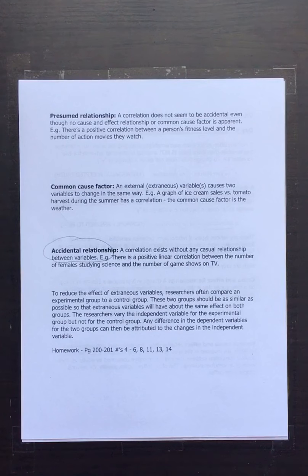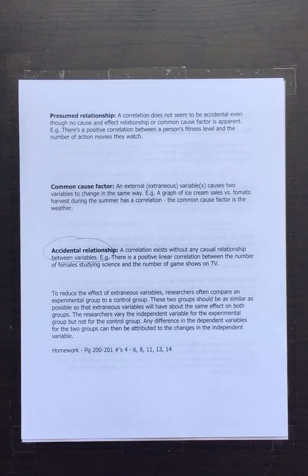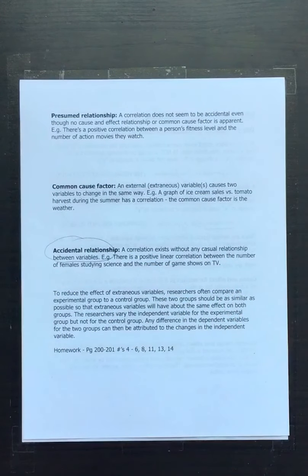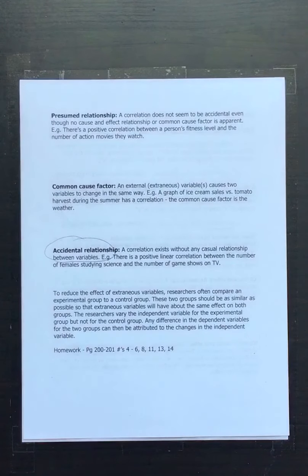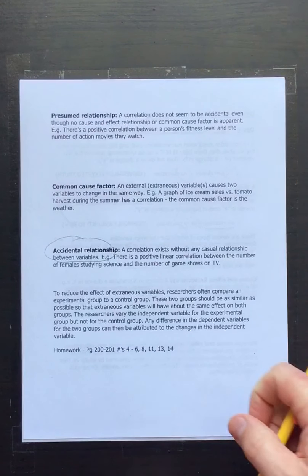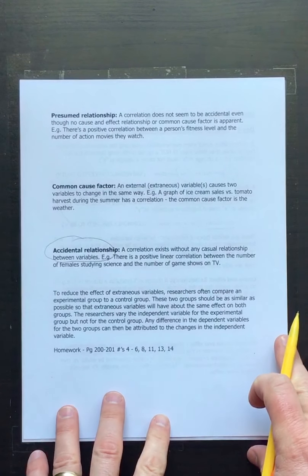You might say that about tomato harvest and ice cream sales if you couldn't find the hidden common cause. An accidental relationship could be something like the length of your hair and how much money you make — perhaps a mathematical relationship exists, but there's no realistic reason why x would cause a change in y. You can do studies, strip down all the variables, and see whether actual causality exists or whether it truly is just accidental.